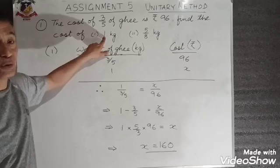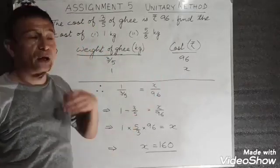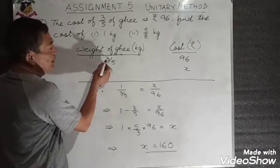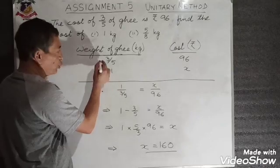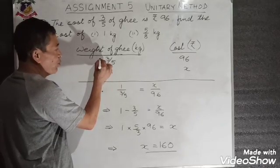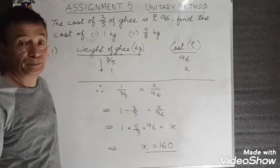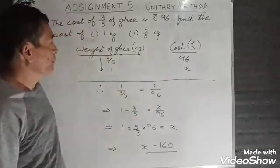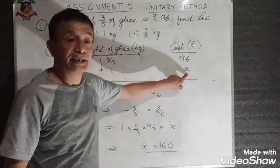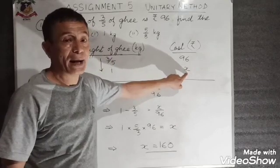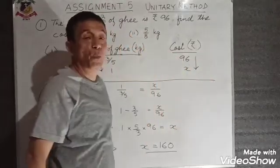I'm supposed to find the cost of 1 kg, so 1 kg will be x. Now to use the arrow: a proper fraction is always less than 1, which automatically means that 1 is more. So the arrowhead moves towards more. Since 1 is more, the cost for 1 kg which is x will also be more, so the arrowhead moves towards more.